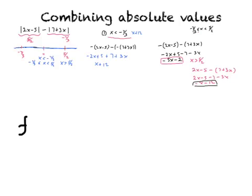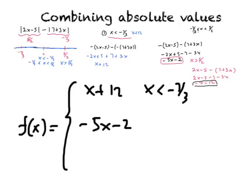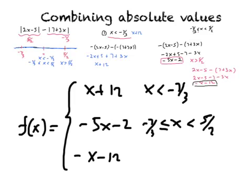Now we have the function on all three pieces. Our function f gives us: x plus 12 when x is less than minus 7 over 3; minus 5x minus 2 when x is greater than or equal to minus 7 thirds but less than 5 halves; and minus x minus 12 when x is bigger than 5 halves. That is the piecewise function solution.